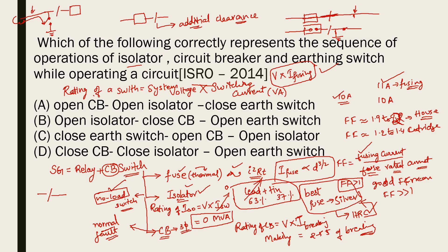Looking at the sequence: Option A says first open CB — when CB is opened, current in the system becomes zero. With zero current you can safely open the isolator. After opening the isolator, close the earth switch, which discharges whatever stored charge remains. So Option A represents the correct sequence: open CB → open isolator → close earth switch.